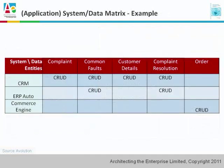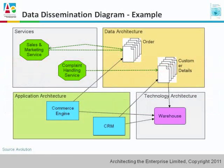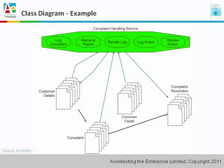Here we've got the system-to-data matrix, with data entities across the top, applications down the side, and the CRUD operations in the cells. The data dissemination diagram shows how data relates to applications, to business services, and also to technology. The class diagram shows us how the data entities relate to each other, and also to things like business services.